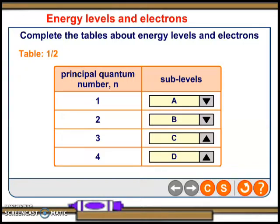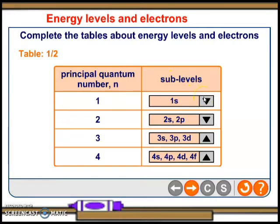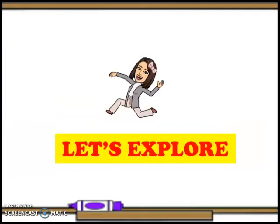In this activity, you will complete the tables about energy levels and electrons. You may pause the video to answer. As shown in the table, the principal quantum number is always equal to the number of sub levels within the principal energy level. Principal energy level 1 has one sub level, level 2 has two sub levels, level 3 has three sub levels, and level 4 has four sub levels.